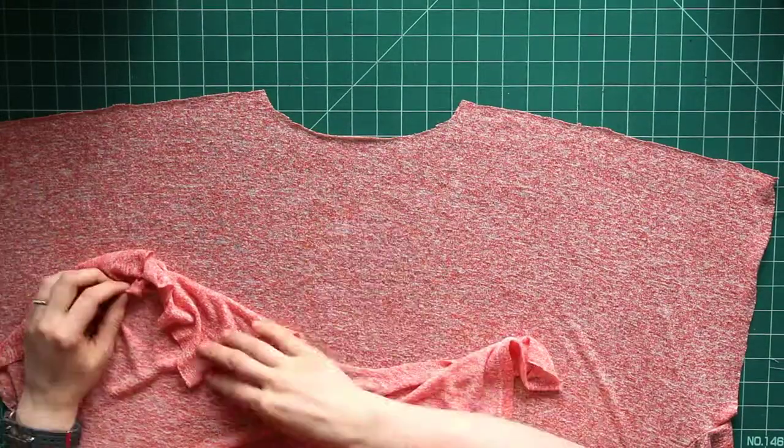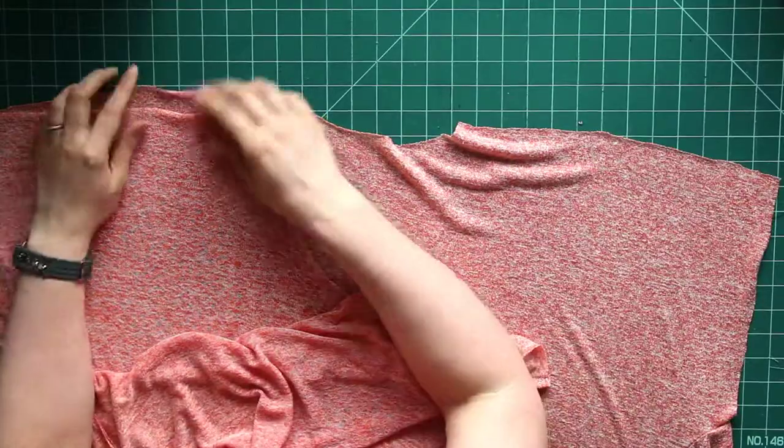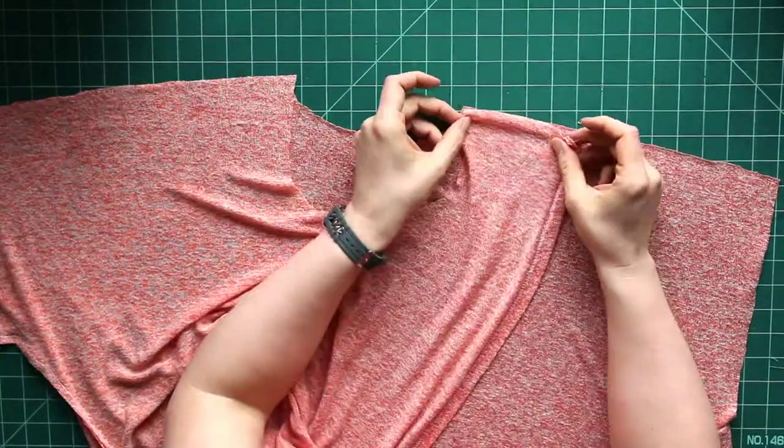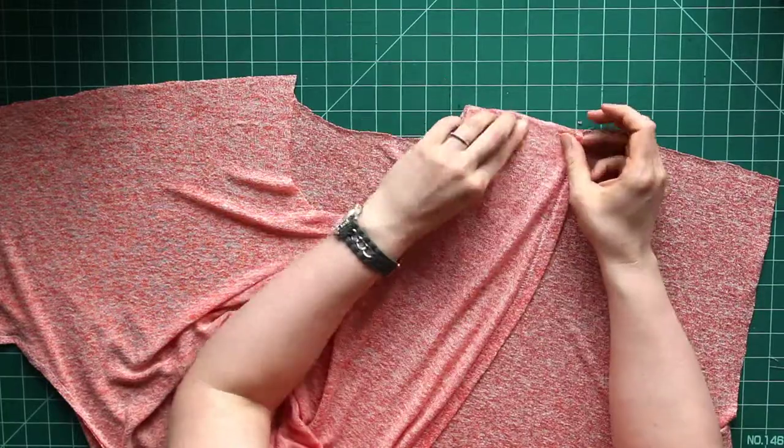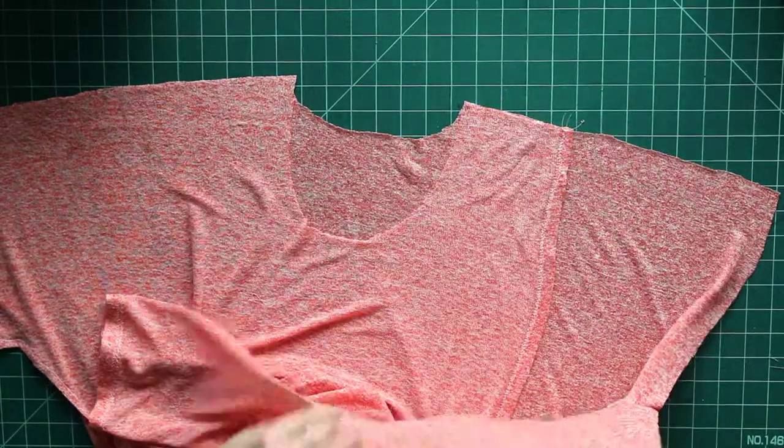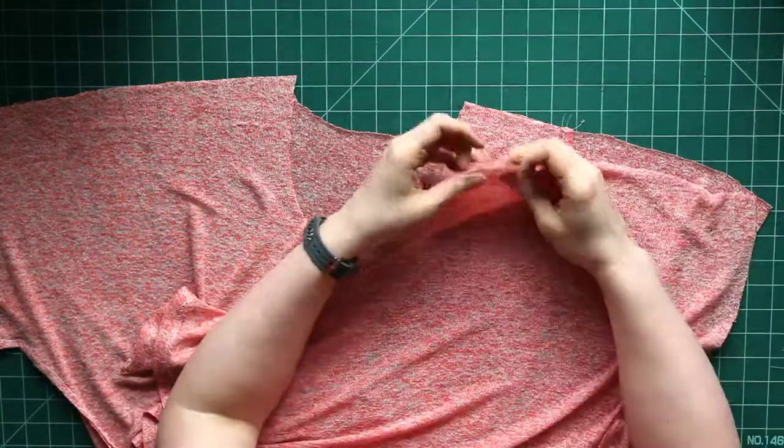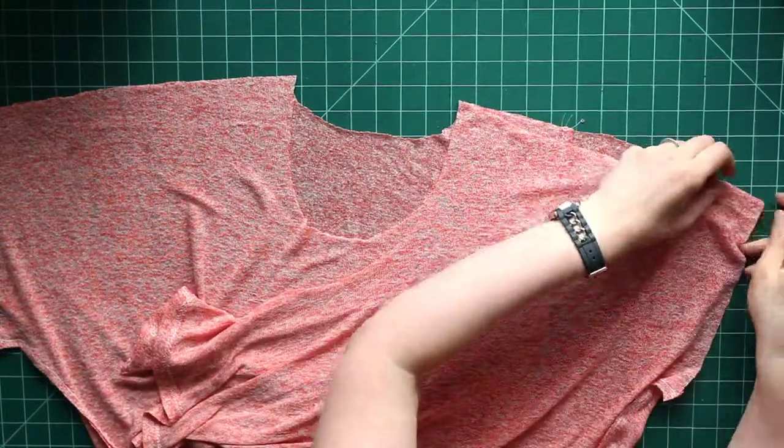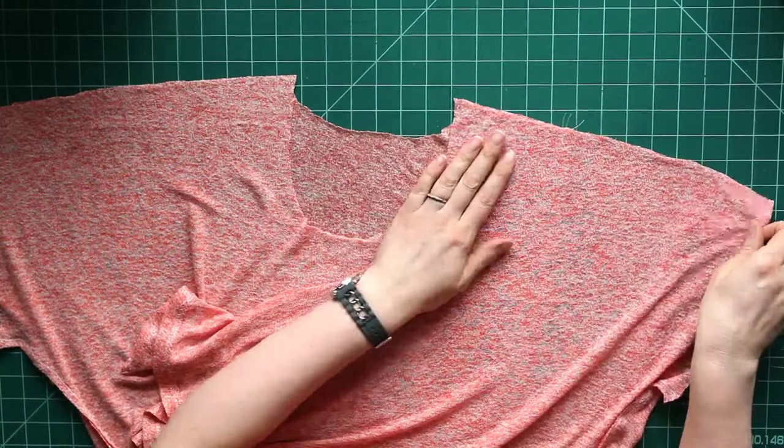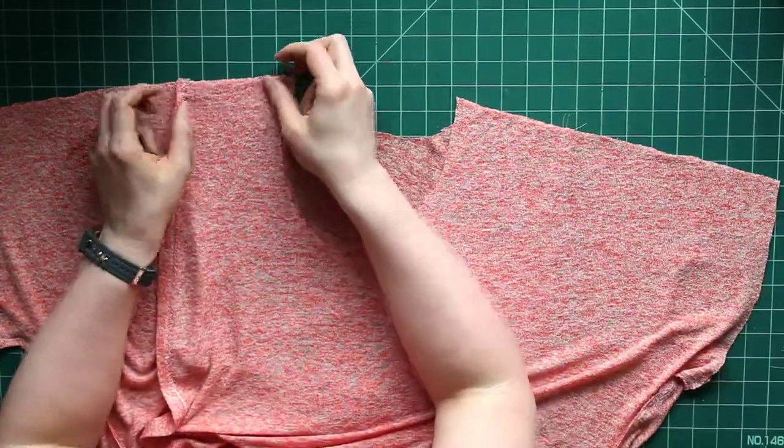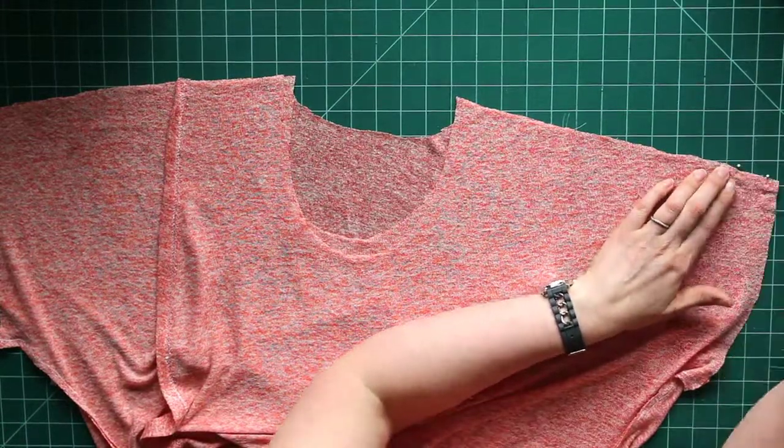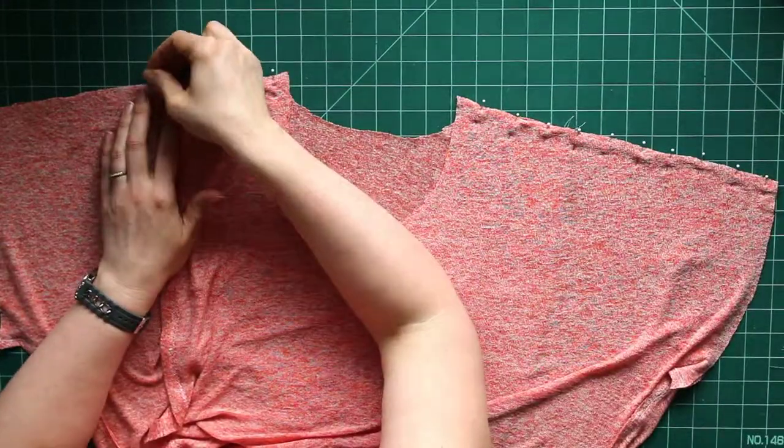Next we're going to do the shoulder seams. Now it says in the instructions to do each side separately but I just did them all at once and pinned everything and it worked out fine. Next I'm going to stitch those with a straight stretch stitch and a zigzag which is also what I did on the side seams.